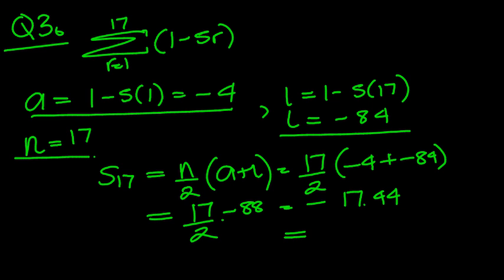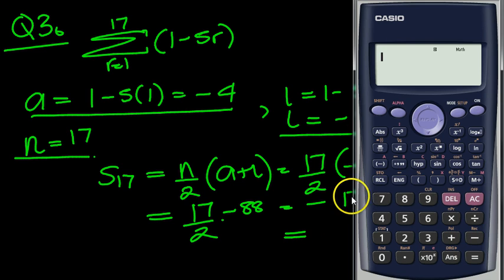So let's get the calculator then, which is down here somewhere. Here it is. Okay, we want 17 times 44, don't we? Equals 748.